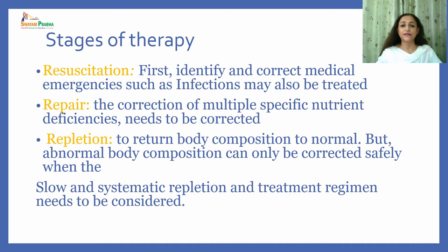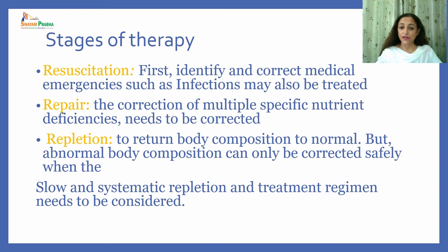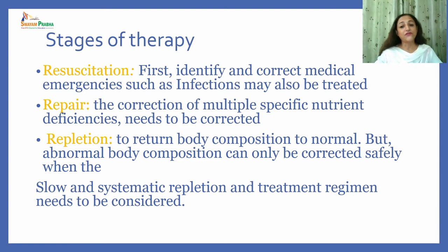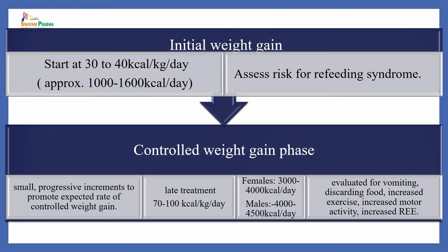The second phase is the repair phase, which involves correction of multiple specific nutrient deficiencies. This leads to the third phase, repletion, where the main aim is to return body composition to normal. Abnormal body composition can only be corrected safely through slow and systematic repletion, because an abrupt increase in calories can cause refeeding syndrome.